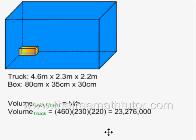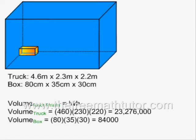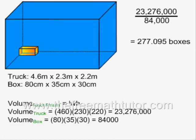The volume of a box is 80 times 35 times 30, which is equal to 84,000 cubic centimeters. All we have to do is divide 23,276,000 by 84,000, and we can see that we should be able to fit 277.095 boxes in this truck. This answer is given after rounding off to the nearest thousandth.